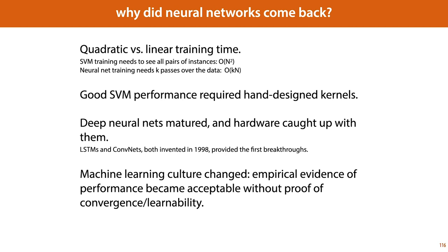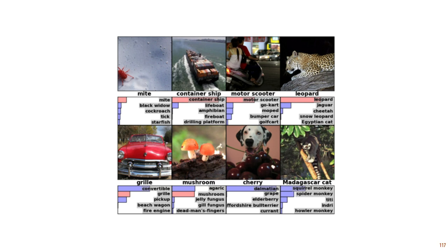Empirical evidence of performance became acceptable without proof of convergence and proof of learnability. In the time of support vector machines, there was a strong requirement when you introduced a new method to show that the learning problem was convex so that it could be easily solved. For neural networks, we knew upfront that the problems weren't convex, so there was a certain amount of distrust in whether these methods could be used in practice at all. And as the machine learning culture shifted from requiring theoretical proofs of convergence or of learnability to empirical evidence of success on specific datasets, it became easier to publish results about neural networks. And when neural networks did come back, they caused a revolution, and that is where we'll pick things up next lecture.